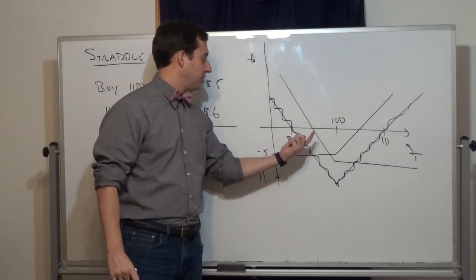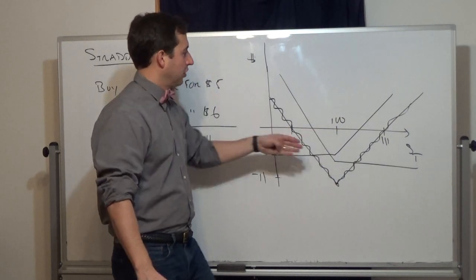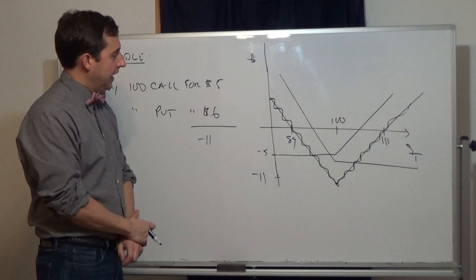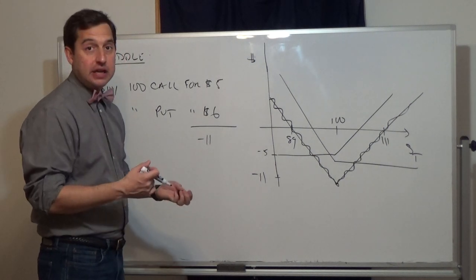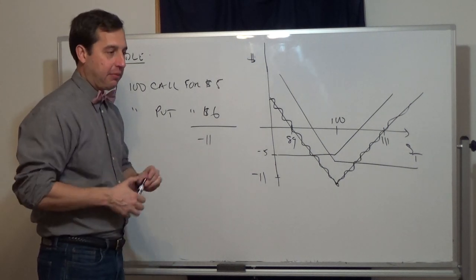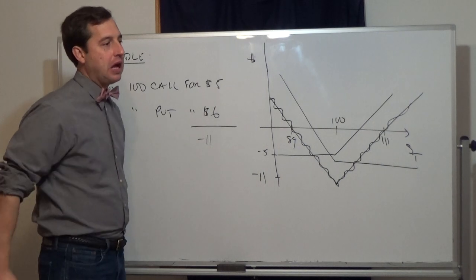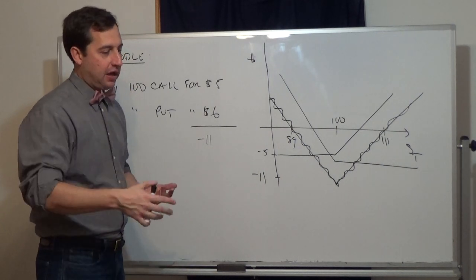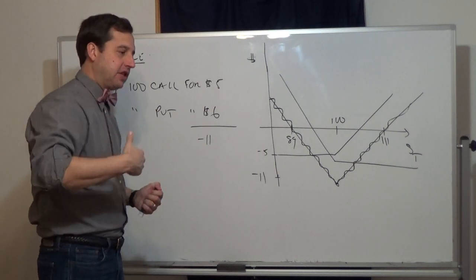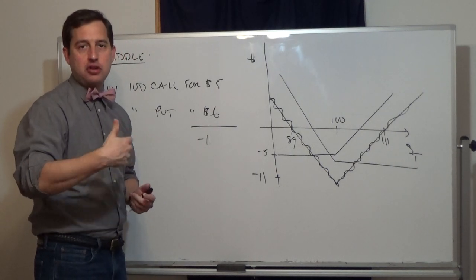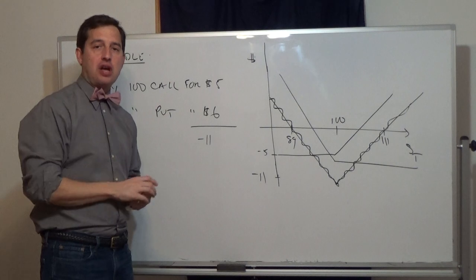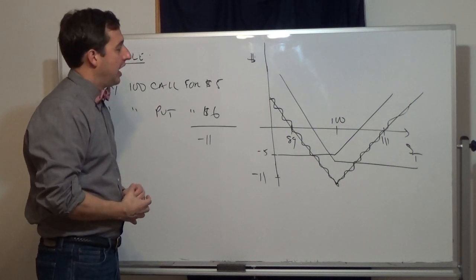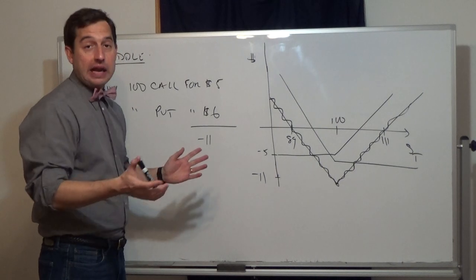Our straddle position has a max loss of $11. We break even when the underlying stock price is $89 and $111, and our gain is unlimited on the call side. Comparing to other strategies we've covered — bull call spreads, collars, protective puts — all of those involve a directional bet. A protective put or bull call spread means you prefer the stock to increase.